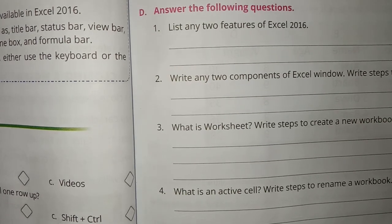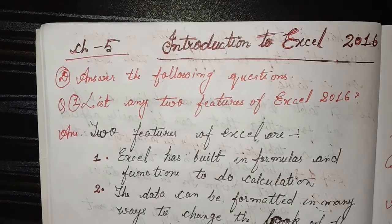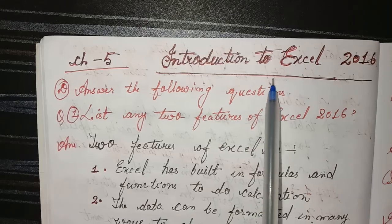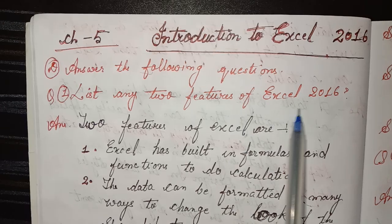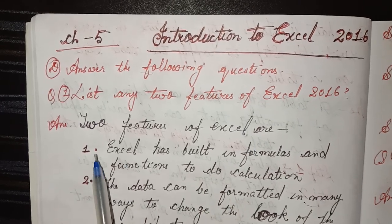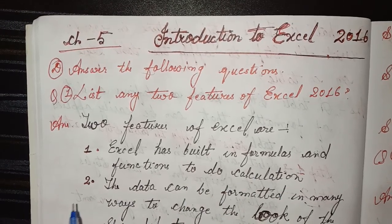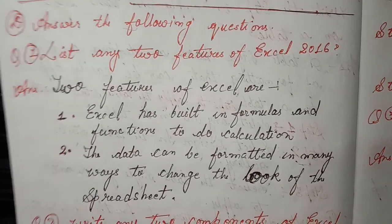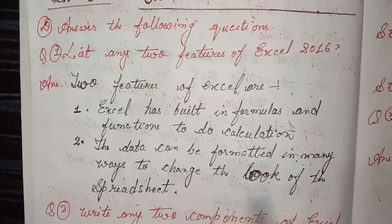Answer the following questions in notebook. Chapter 5: Introduction to Excel 2016. First question: List any two features of Excel 2016. Answer: Two features of Excel — first, Excel has built-in formulas and functions to do calculations; second, data can be formatted in many ways to change the look of the spreadsheet.